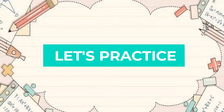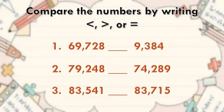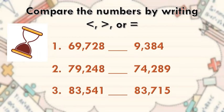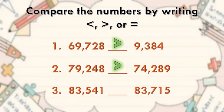Now it's your turn. Let us practice. Compare the following numbers by writing less than, greater than, or equal. Number one: 69,728 is greater than 9,384. Number two: 79,248 is greater than 74,289. Number three: 83,541 is less than 83,750.